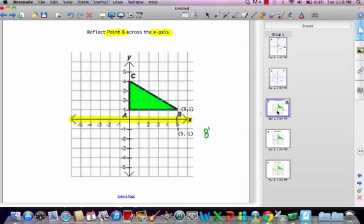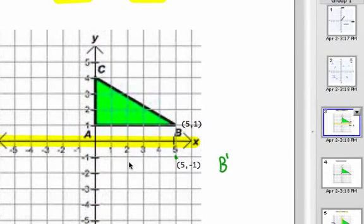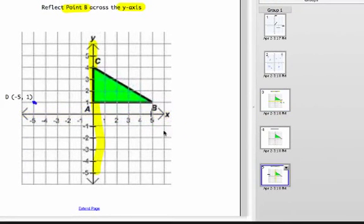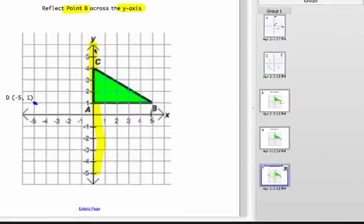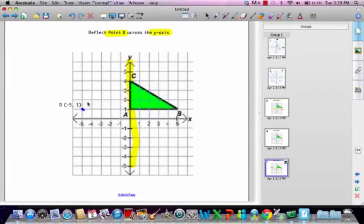The only thing that changed when we reflected it here was the x-coordinate. It became negative instead of positive. And when we did the one before, it was actually the y-coordinate that changed. So depending on what axis you reflect over, one point will change, and one point will become the opposite point, if that makes sense. So here we reflected across the x-axis, so the x-coordinates stayed the same. On the other problem, we reflected across the y-axis, so the y-coordinate remained 1 in both instances.